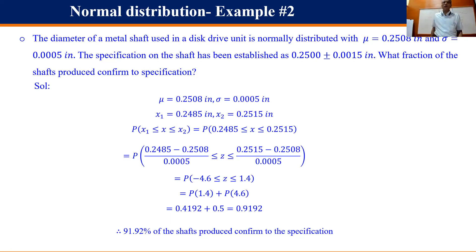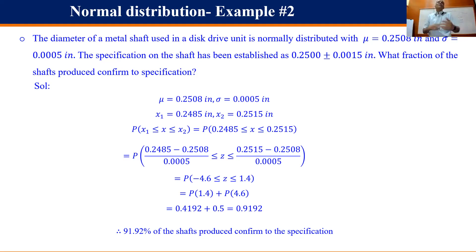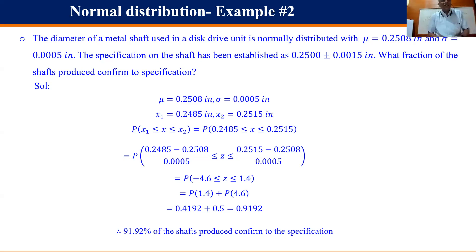The probability that shafts conform to the specification is 0.9192 — about 92% pass. The manager asks: can we reduce the 8% waste to 5%? The worker answers: give me a better CNC machine or a robot. But that increases the cost of the final equipment, affecting sales. This is a tough trade-off to answer.